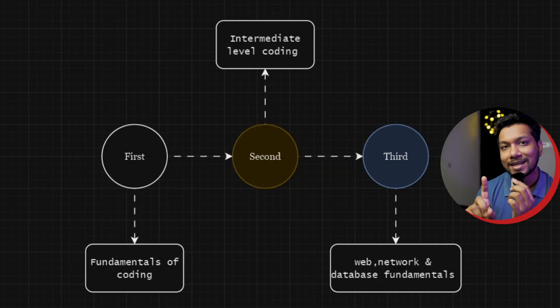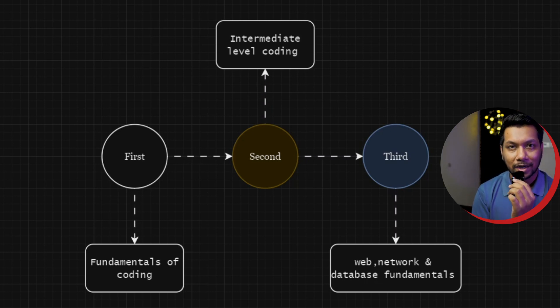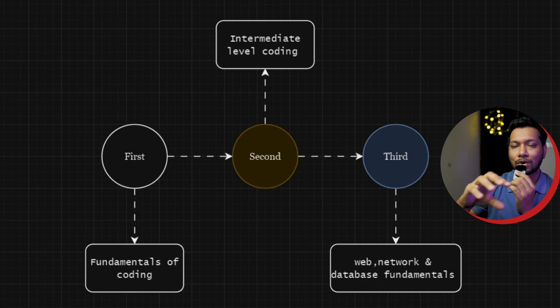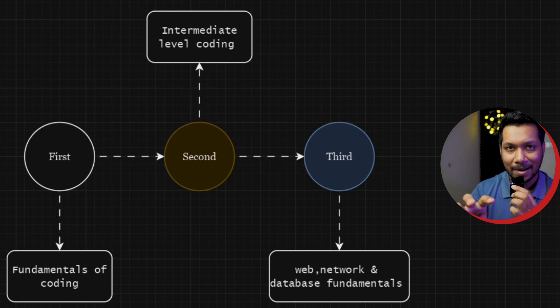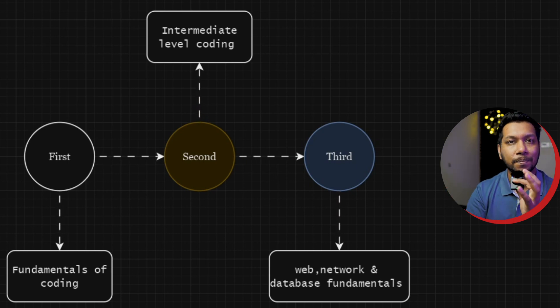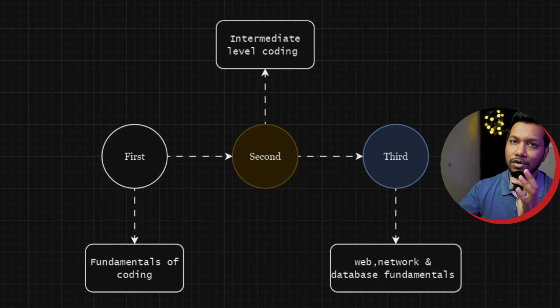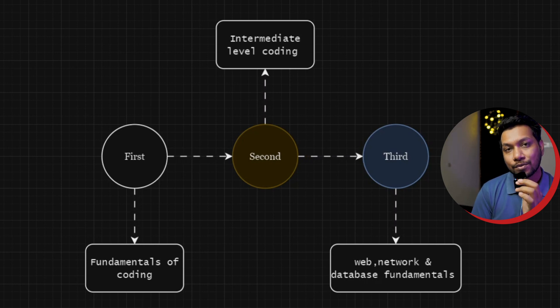We have to clear the basic building blocks: learn coding fundamentals and basic programming concepts first. The language you use is not the priority — what matters is learning the same foundational steps. Then move to data structures and algorithms at an intermediate level, and after that, cover networking, databases, or web development. The fourth step is interview preparation.